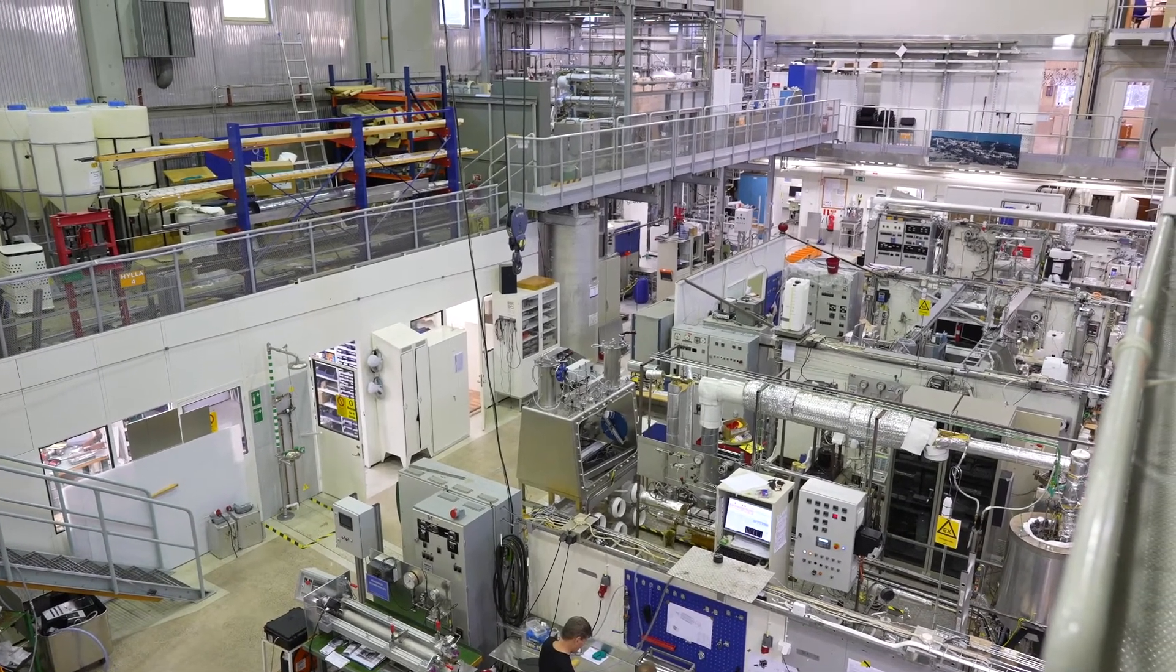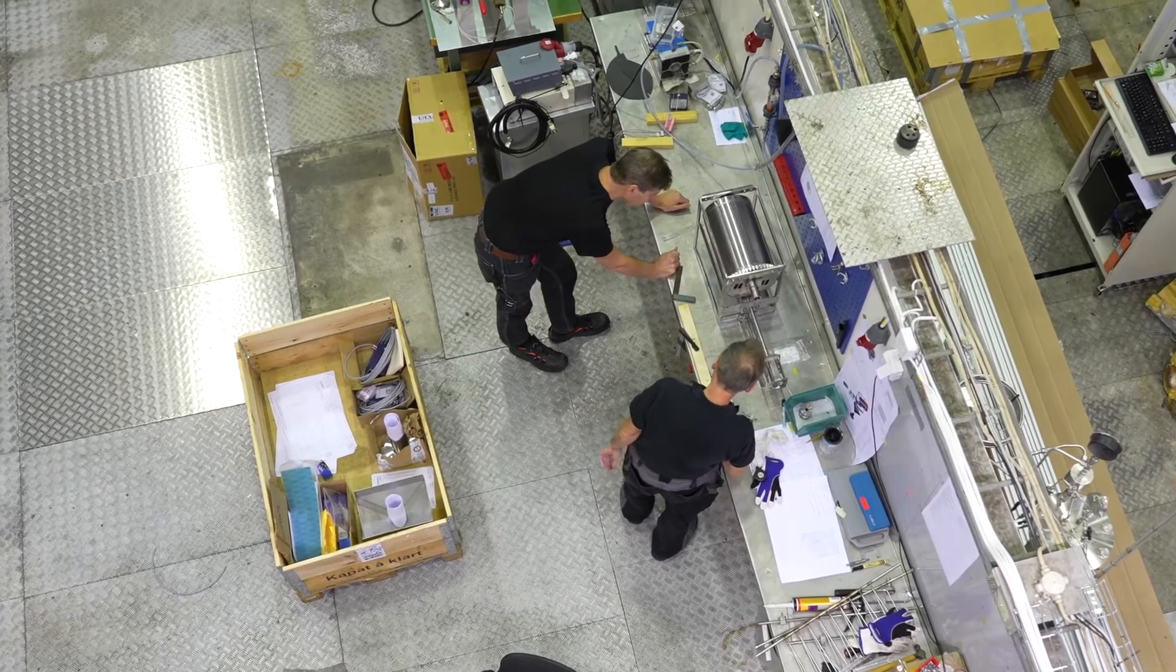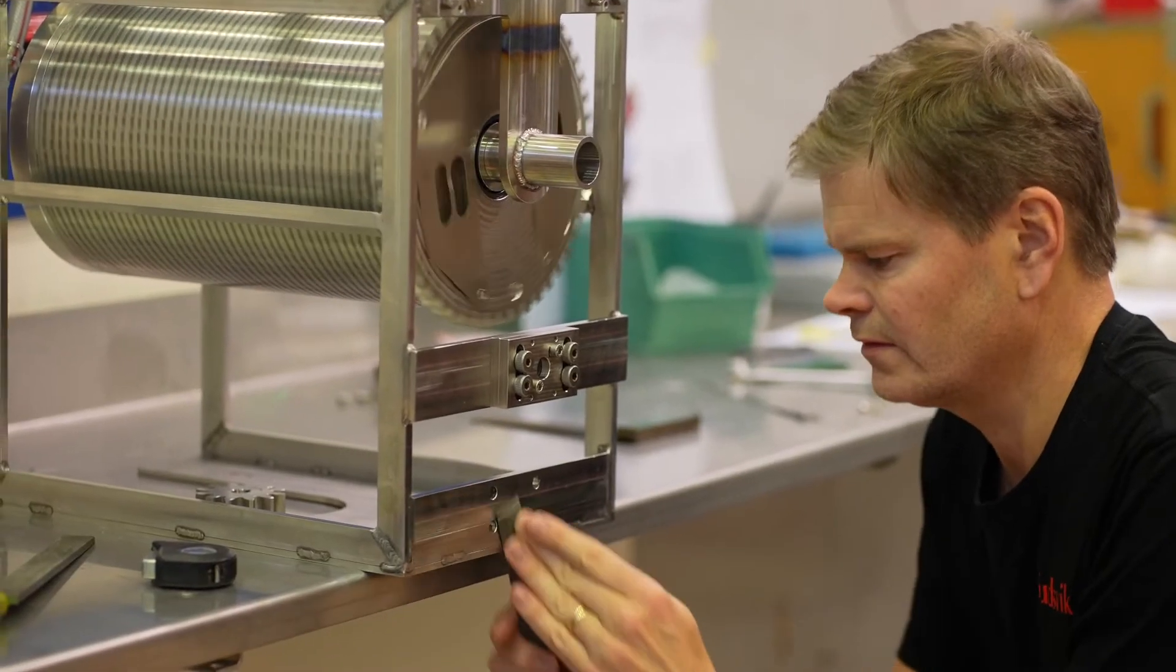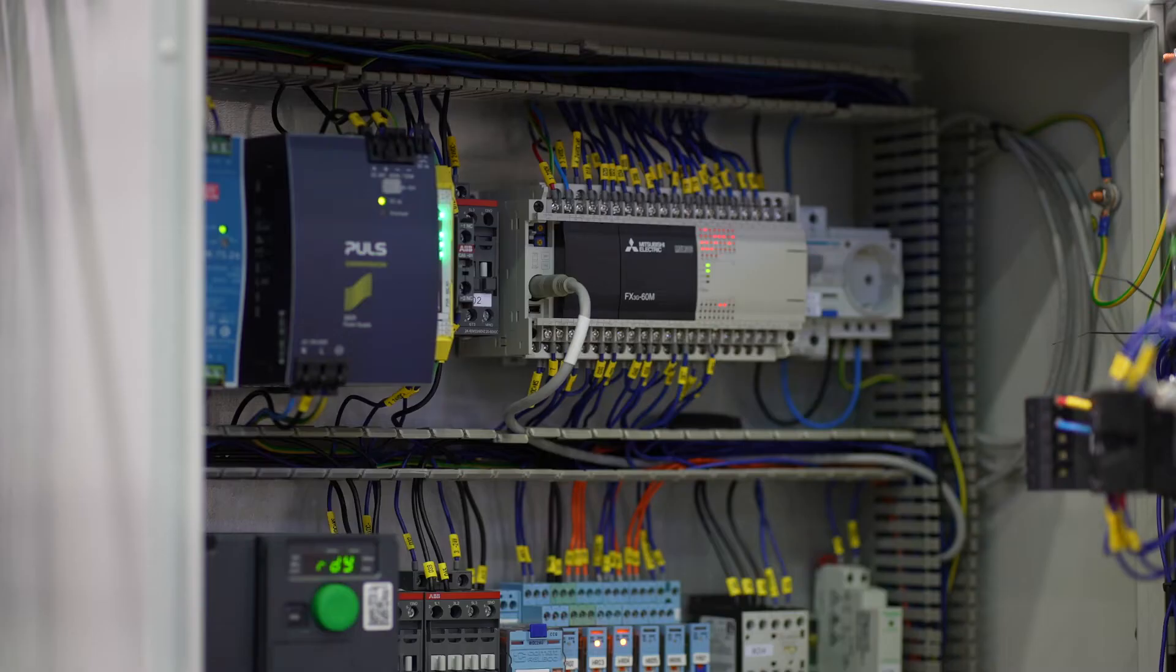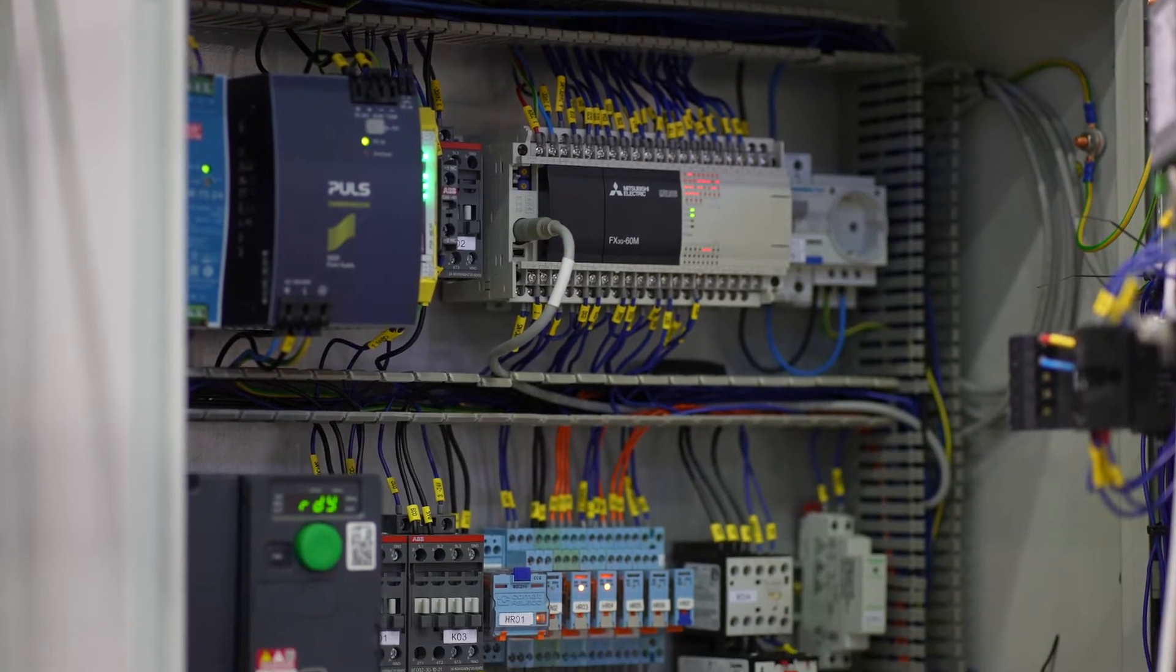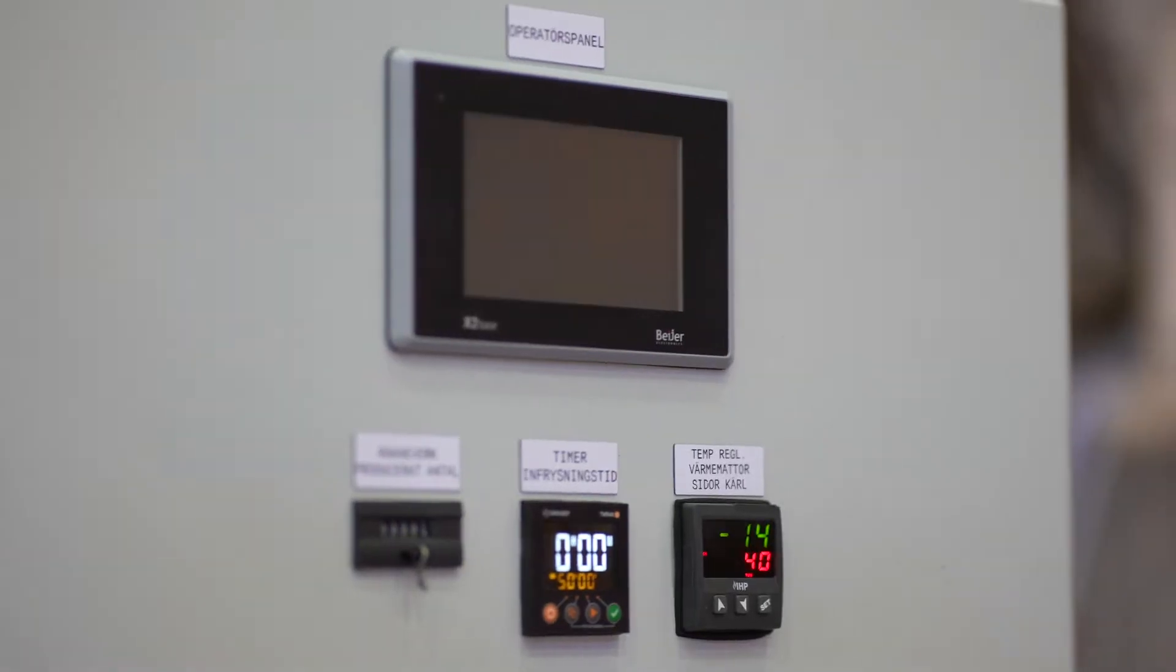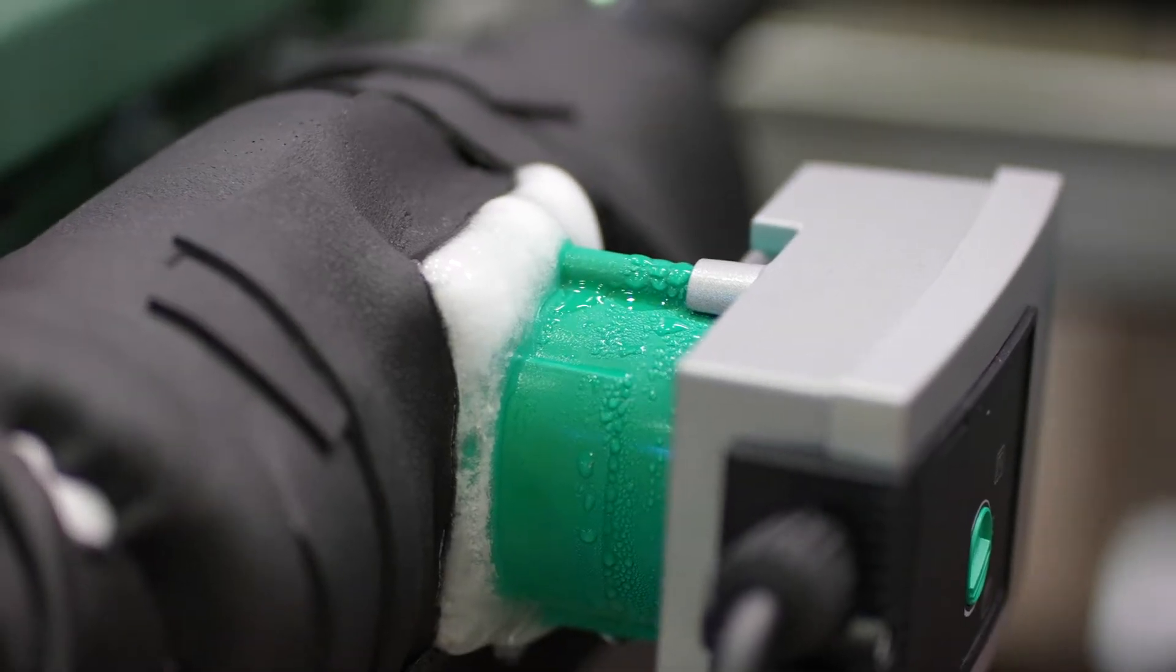The heart of the laboratory is the water purification plant for the production of degassed high-purity water. The system produces 500 liters per hour and supplies all autoclaves in the laboratory with water. The degassed, purified water is produced from tap water using several cleaning steps.